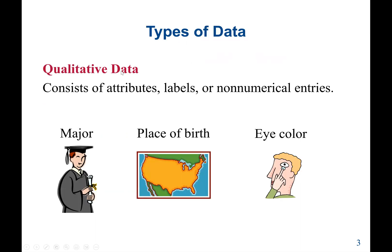We start with qualitative data. Qualitative data consists of attributes, labels, and non-numerical entries. This means we cannot perform arithmetic operations or mathematical computations on qualitative data. Examples can be a major, the place of birth like New York, or your eye color — blue, yellow, etc.